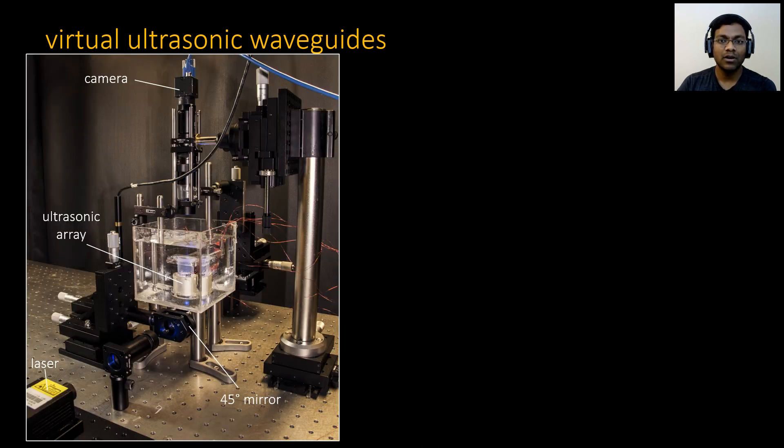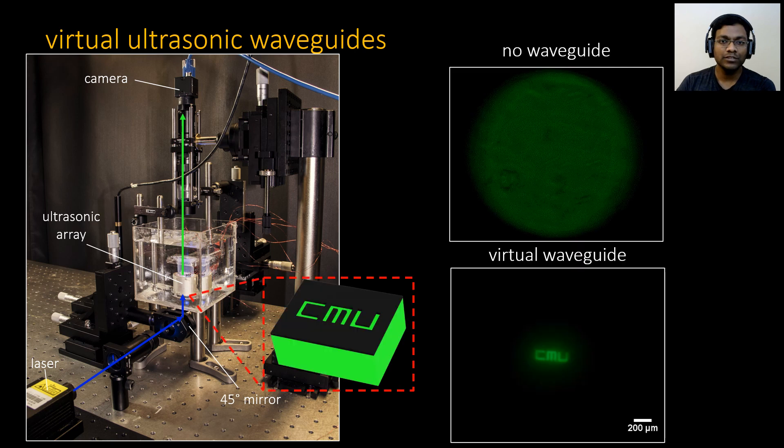For a demonstration, on the left we have an experimental setup we have built. The laser enters the scattering media surrounded by an ultrasonic array via some optics. The scattered light is then captured by the camera. We used a fluorescent target, and with ultrasound off, we would see a completely diffuse image. With ultrasound on, the tissue becomes continuously refractive, and the photons are threaded through the scattering medium.